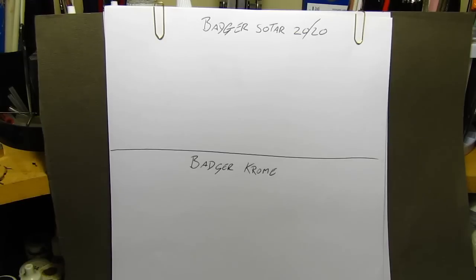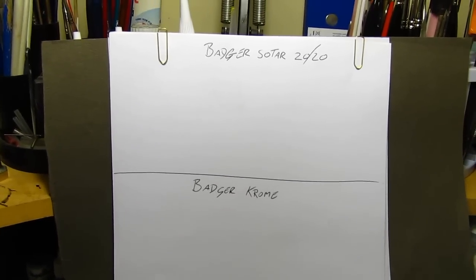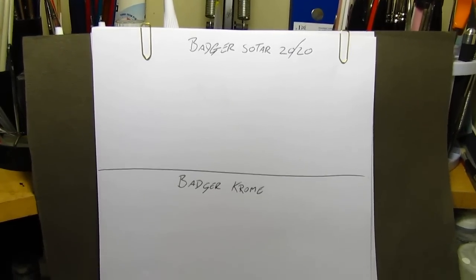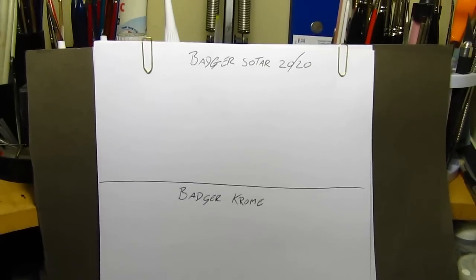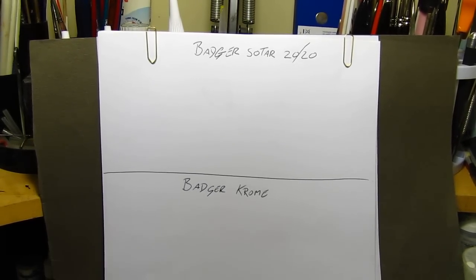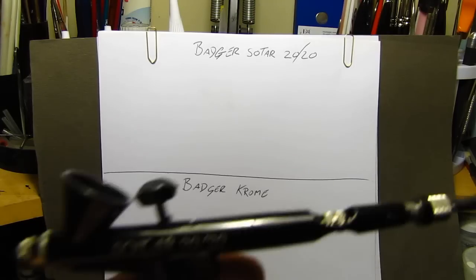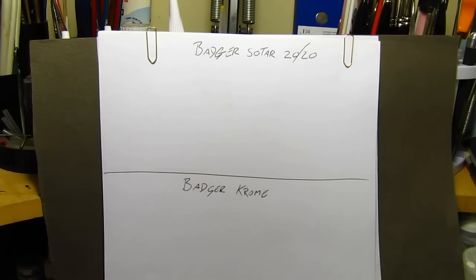So, as you can see by here, I've got obviously the Badger Sotar 2020, the Renegade Chrome, and at the bottom I've got the Badger 100G. So let's start off with my super fine airbrush, which is the Badger Sotar 2020, and see how fine we can spray this baby up.